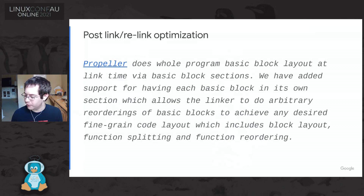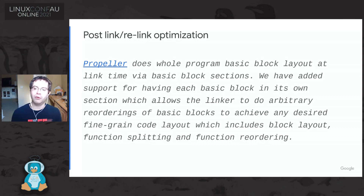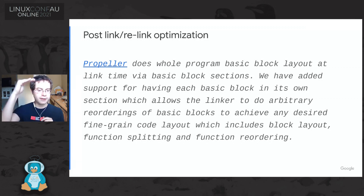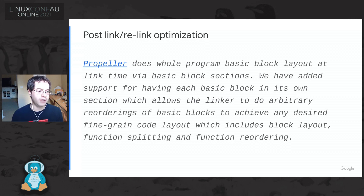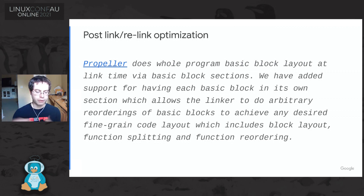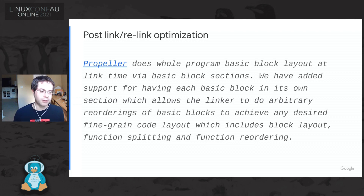One of the things I think is really cool — there's a project from Facebook called BOLT that does optimizations post-link. It takes profile data and reorders basic blocks, which are finer-grain sub-parts of your program — any sequence of statements before you have control flow is considered a basic block. Their paper shows we're leaving optimizations on the table by not reordering basic blocks based on how hot they are in a function. Propeller is an LLVM equivalent that, rather than blowing apart a binary and reassembling it, does this basic block re-layout during build time as a linker optimization. I think that needs to be investigated in 2021.